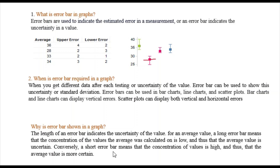Why is an error bar shown? Whenever there is uncertainty in the data, the error bar communicates it. If your error bar is long, it means you have big errors — the average value being calculated is giving you large deviations. A long error bar means the concentration of values around the average is low and thus the average value is uncertain. Very long error bars are always avoided.